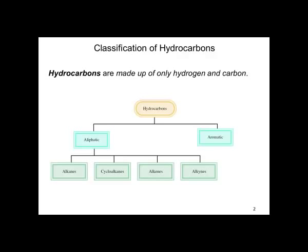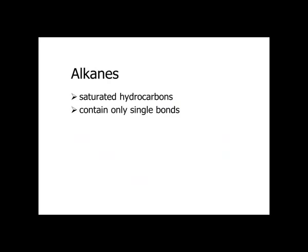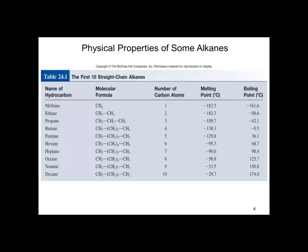Alkanes are saturated hydrocarbons — they contain only single bonds. This table shows the first ten straight chain alkanes: methane, ethane, propane, butane, pentane, hexane, heptane, octane, nonane, and decane. They correspond to the first ten carbon atoms in the molecule.